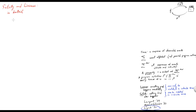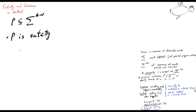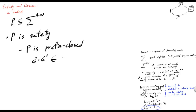Now, let us consider some property as a set of traces. We would say that P is a safety property if, first of all, P is prefix-closed, meaning that for all sigma concatenated with sigma-prime in P, it follows that sigma is in P. Here dot denotes concatenation of traces.